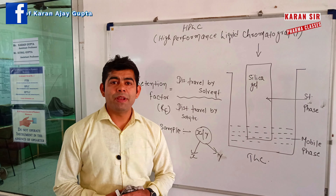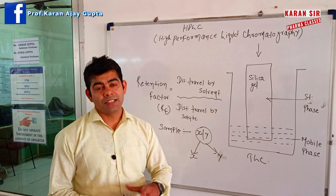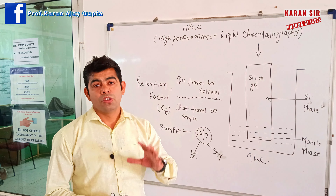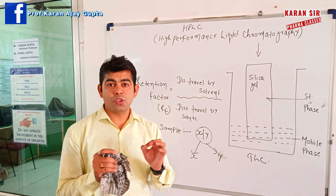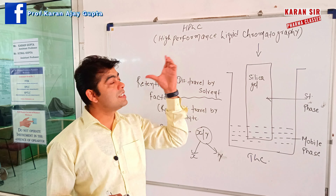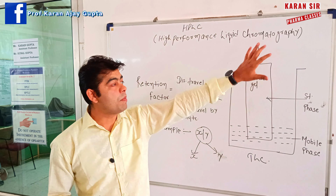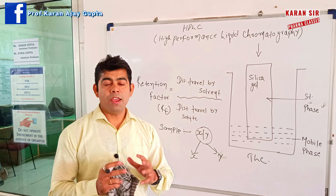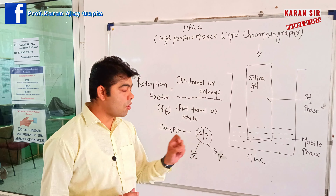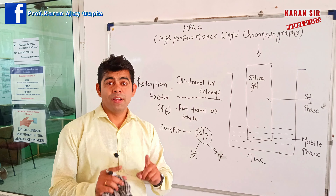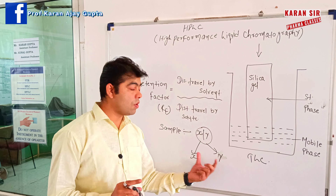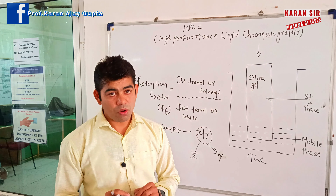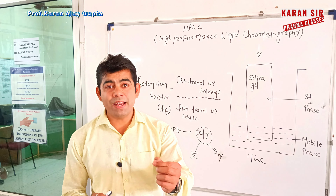Let's start with the principle of HPLC. The full form of HPLC is High Performance Liquid Chromatography. The HPLC principle is based on chromatography. If you understand what is chromatography, you will definitely understand what is HPLC. Chromatography is a technique used for the separation of compounds. If you have a sample containing two compounds X and Y, with the help of chromatography you can easily separate them. TLC is a basic form of chromatography — its full form is Thin Layer Chromatography.